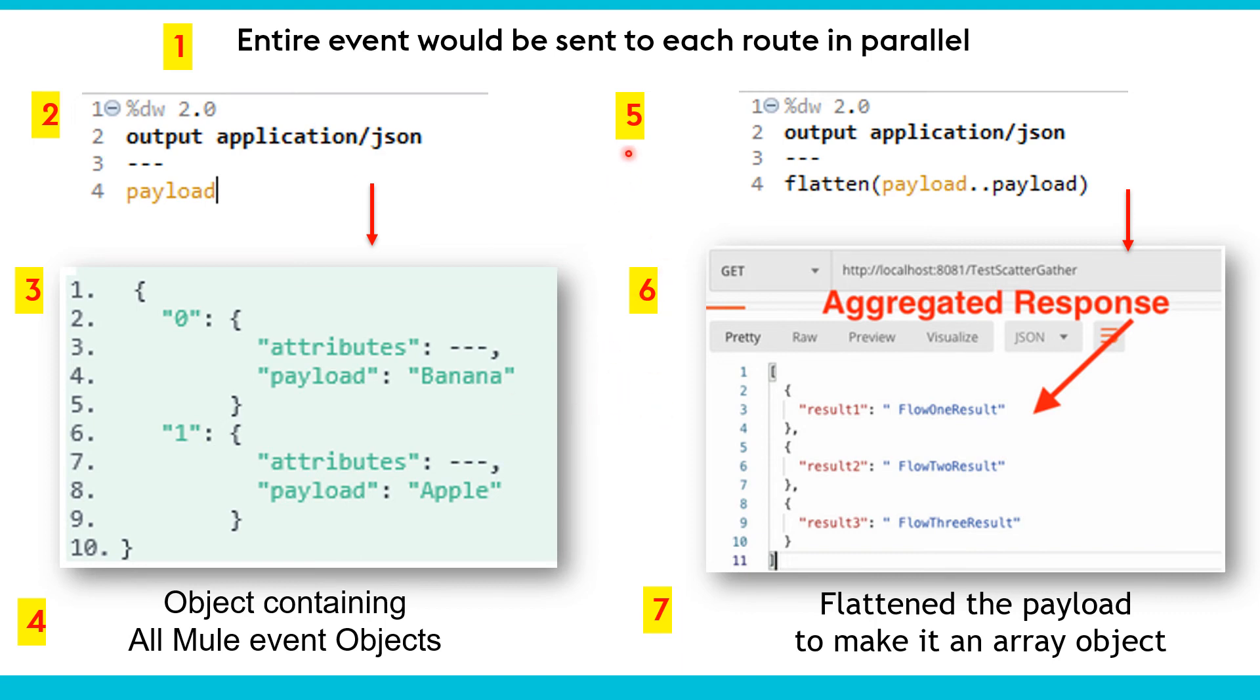So here, when we use flatten payload dot dot payload, we can see the aggregated response. In this aggregated response, we can see multiple results: result1, result2, result3. So this is an array of the results coming from various different routes in scatter-gather.